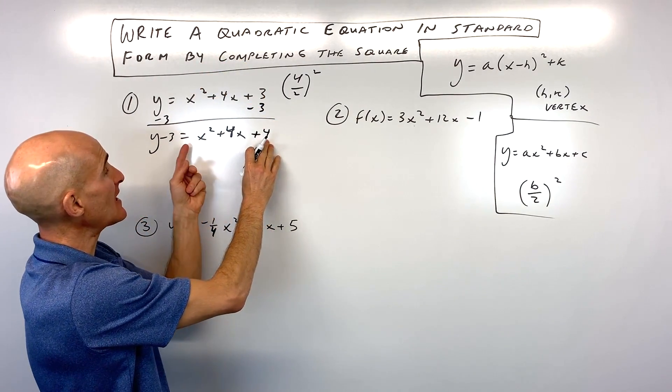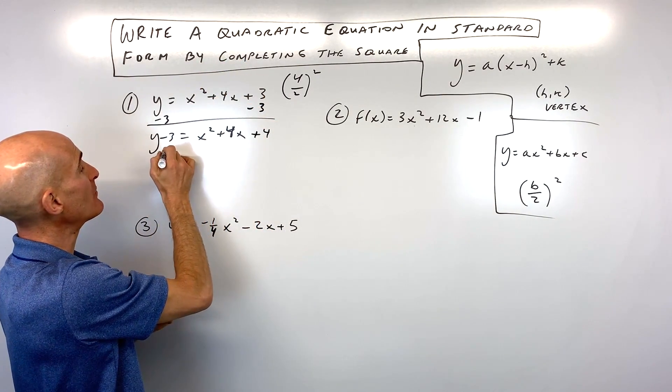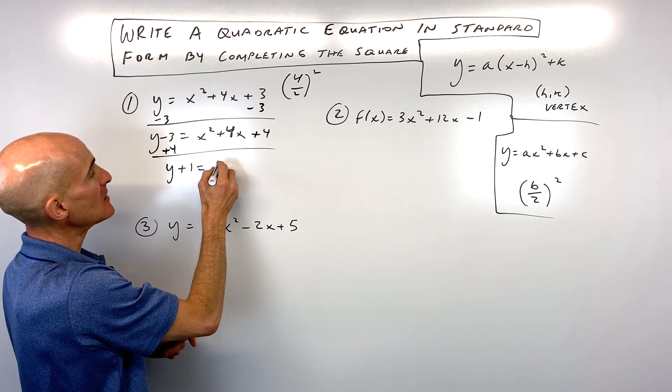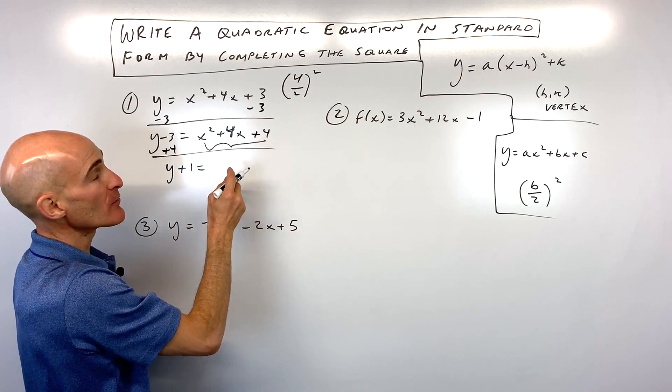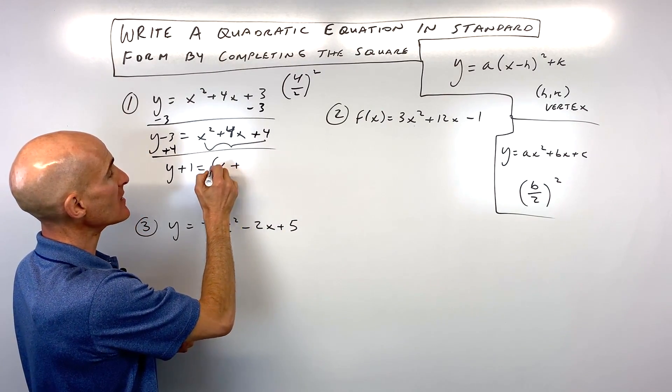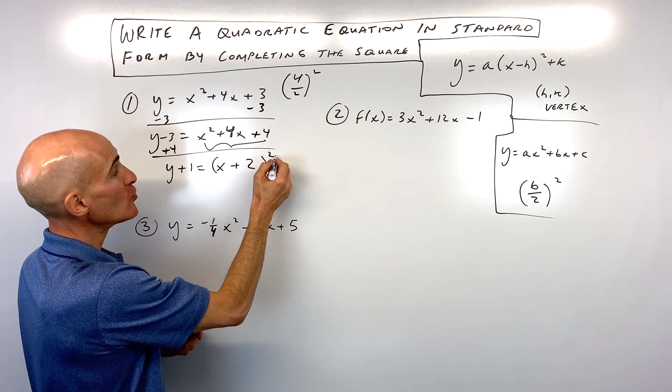Out of thin air, I'm adding 4 to the right side of the equation. So to keep it balanced, I'm going to add 4 to the left side. So this gives us y plus 1 equals. And now what I'm going to do is I'm going to write this as a binomial squared. So it's going to be x plus 2, the quantity squared.